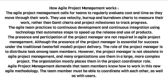How Agile Project Management Works. Agile Project Management calls for teams to regularly evaluate cost and time as they move through their work. They use velocity, burn-up, and burn-down charts to measure their work, rather than Gantt charts and project milestones to track progress. The Agile team practices continuous development and continuous integration using technology that automates steps to speed up the release and use of products.